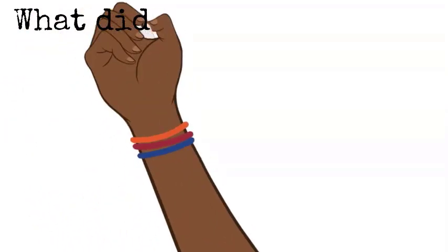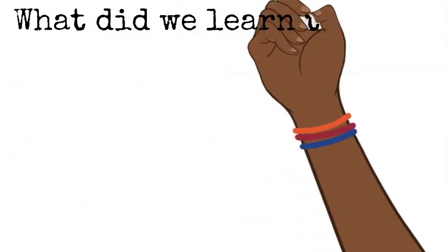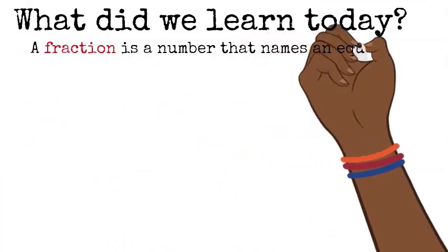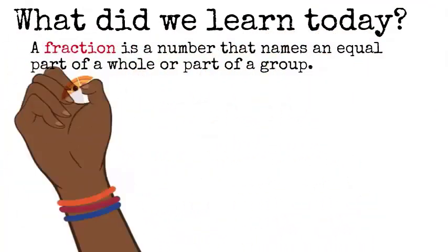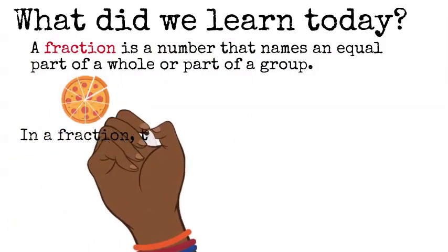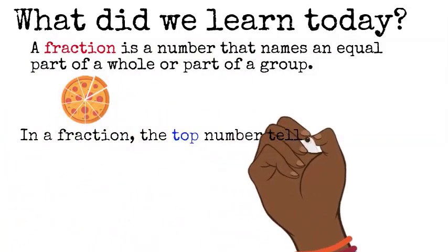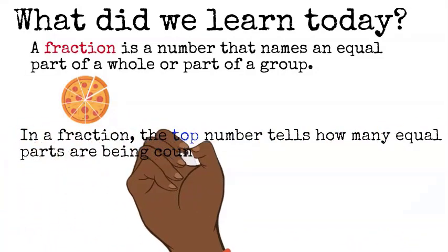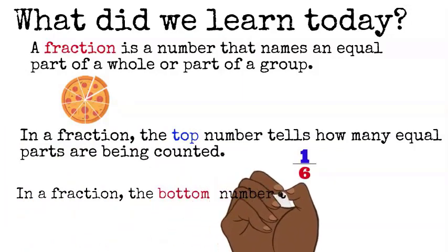So, what did we learn today? We learned that a fraction is a number that names an equal part of a whole or equal part of a group. The slice of pizza is a fraction. We also learned that in a fraction, the top number tells how many equal parts are being counted. So, one-sixth is a fraction with six at the bottom.